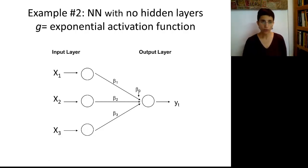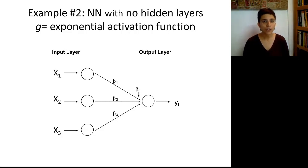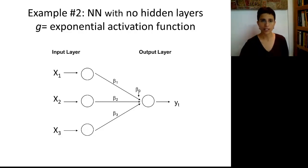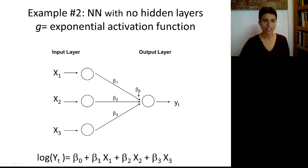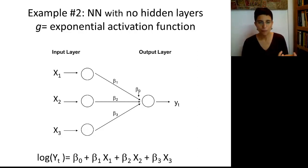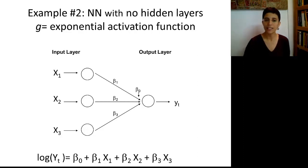Let's look at a second example. Suppose again we have only an input and an output layer, no hidden layers, but now we use an exponential activation function. This is going to look exactly like the previous model, except now we have an exponent before this combination. If we take a logarithm on both sides, this brings us back to a very familiar linear regression where we log-transform the outcome. So again, a very similar type of model to what we've seen in linear regression, except the betas would be estimated somewhat differently than in regression.